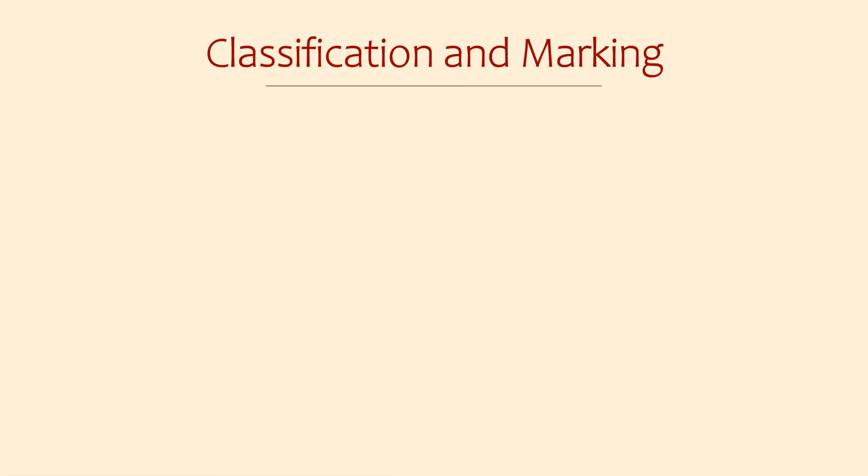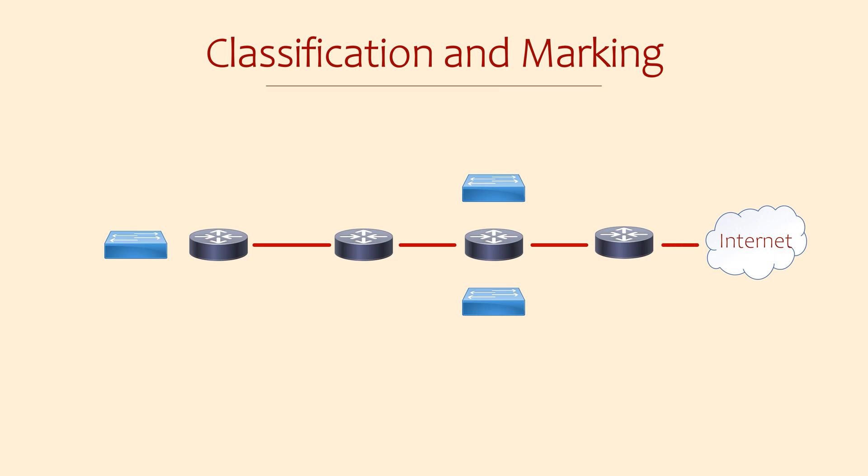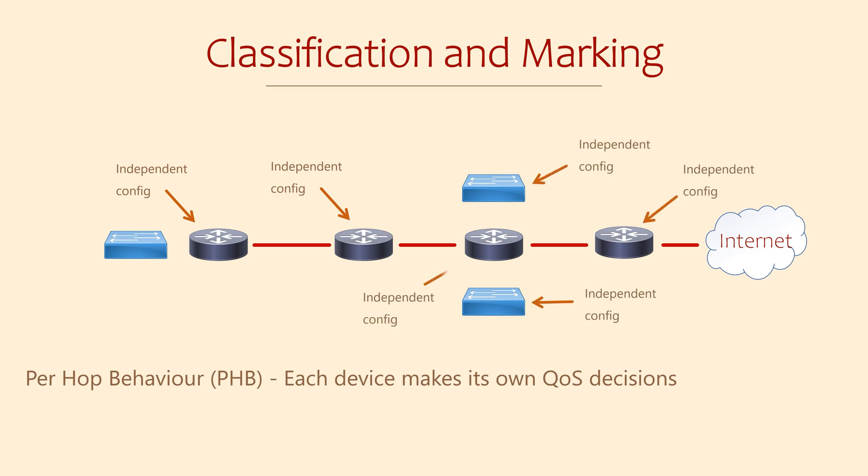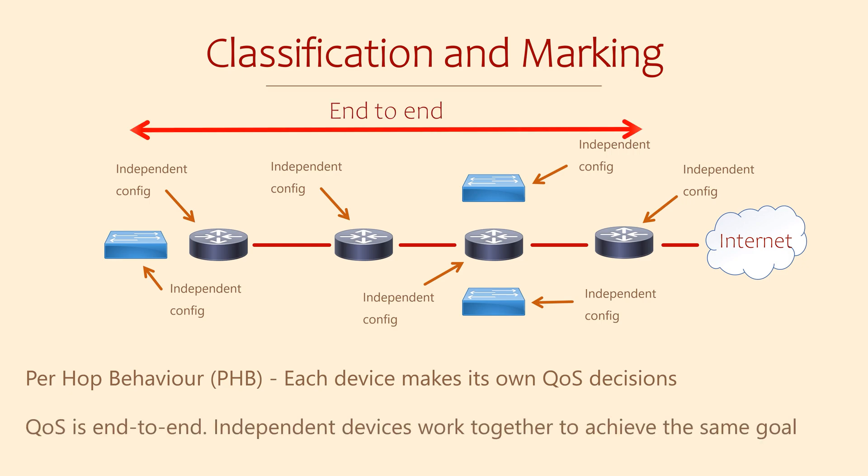There are two perspectives that we need to use when thinking of QoS. On one hand, every device in the network has its own QoS configuration. They are responsible for making their own decisions and taking action. The term for this is PHB, or per-hop behavior. But all these independent devices work together to achieve a greater goal. That means that we also should think of QoS as end-to-end. That is, the configuration on all these devices should work towards the same goal.